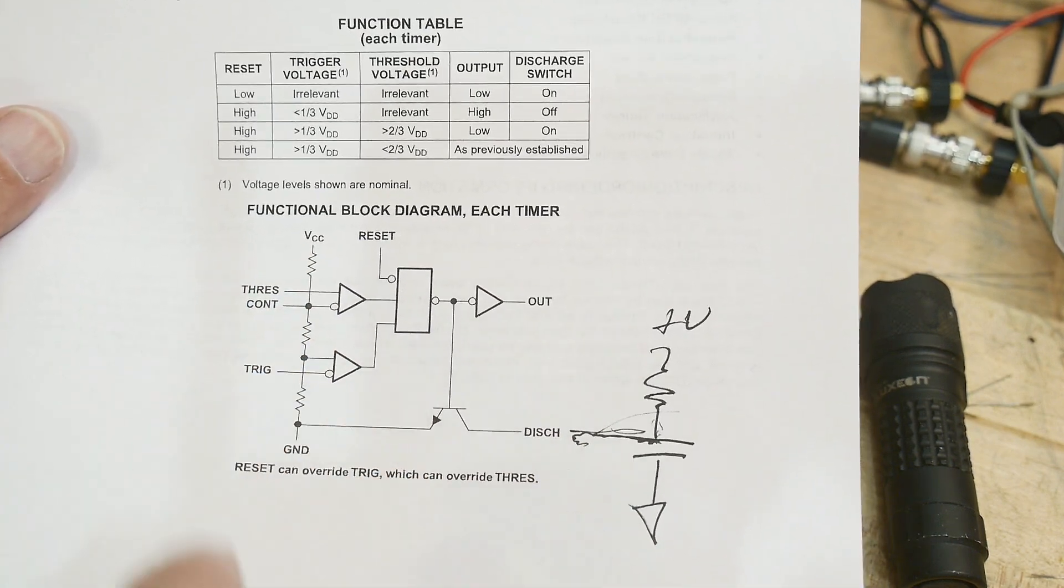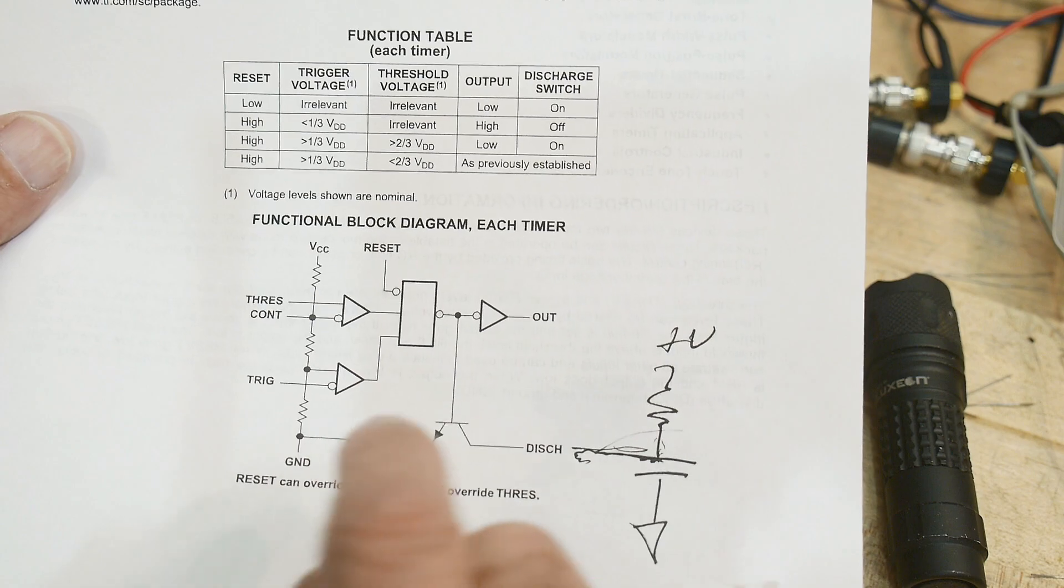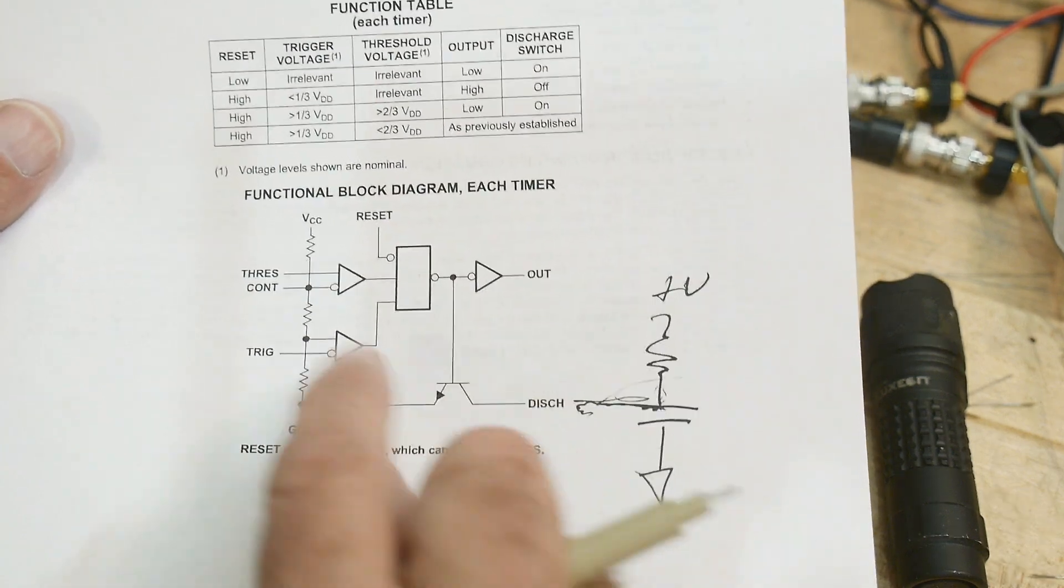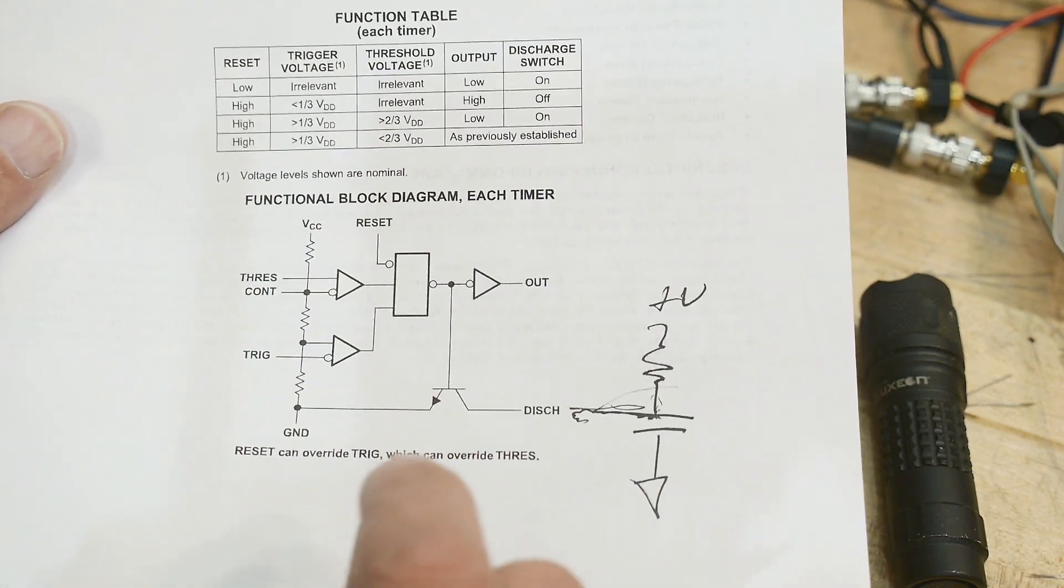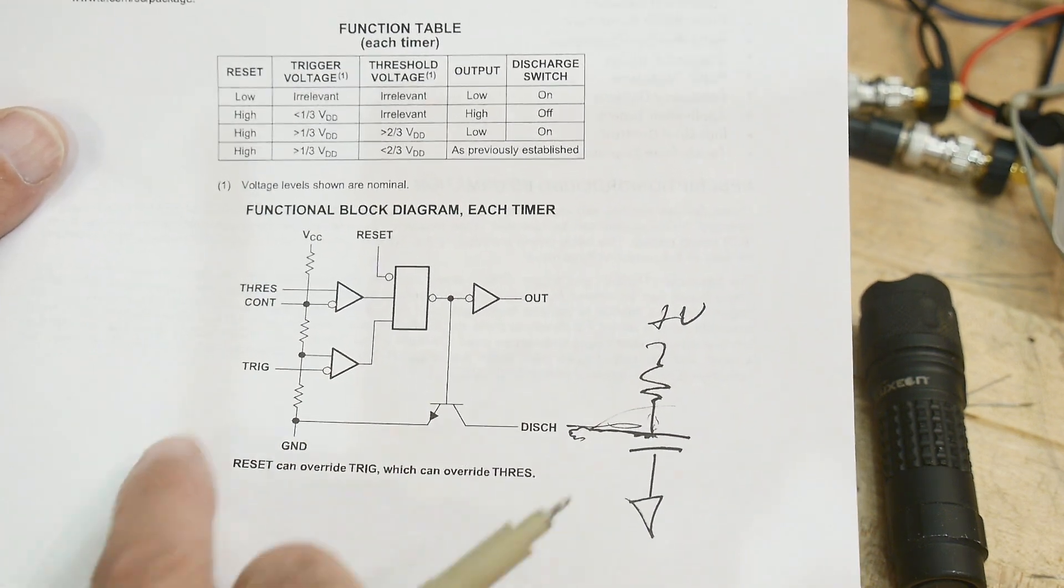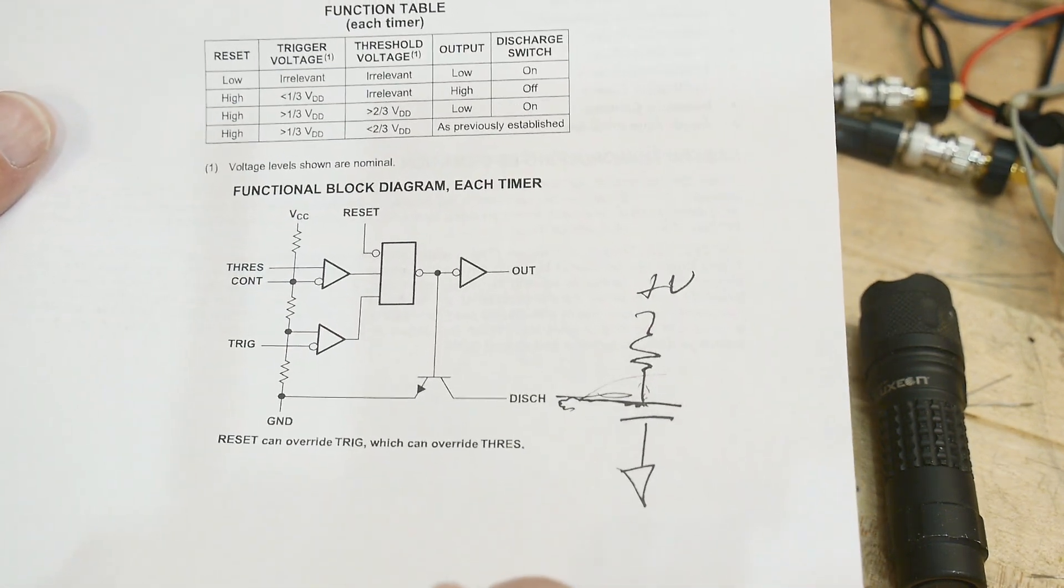There's a resistor, resistor, resistor, 5k, 5k, 5k. That's not why it's called the 555, but they are 5k, 5k, 5k. So they set two-thirds voltage and one-third voltage, and then this thing fires and flip flip flip flip flip.